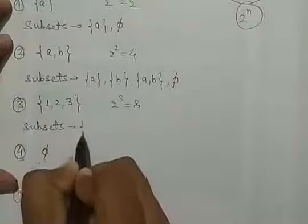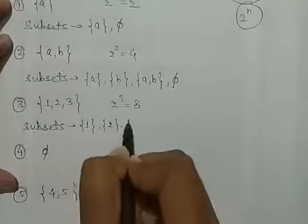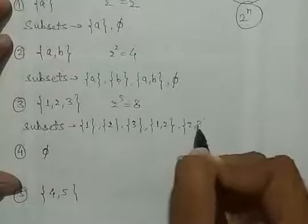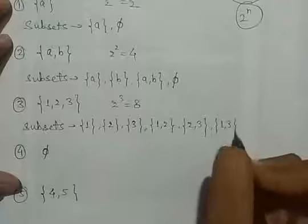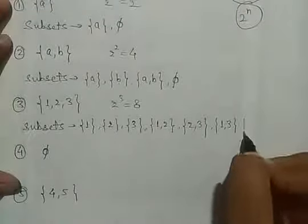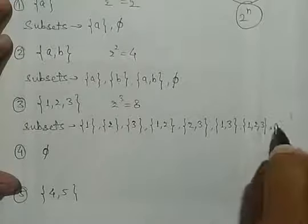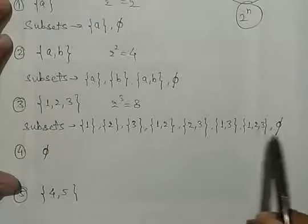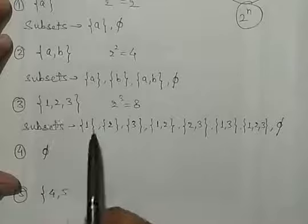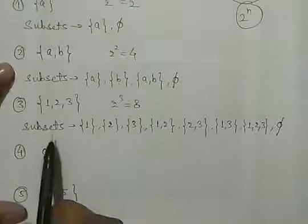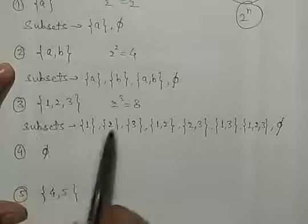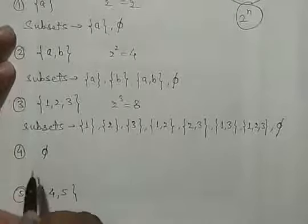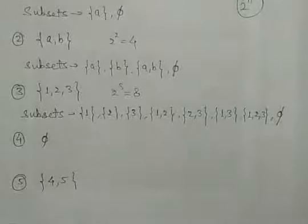So the subsets are: {1}, {2}, {3}, {1,2}, {2,3}, {1,3}, {1,2,3}, and ∅. यह 2 तो मैंने बताया था आपको कि fix हैं — {1,2,3} खुद और ∅. और बाकी इनको अलग-अलग different groups बना लेंगे, क्योंकि जो subset होता है, उसका element set को belong करता है. तो 1, 2, 3, {1,2}, {2,3}, {1,3} — ये सभी उसको belong कर रहे हैं.